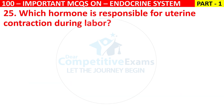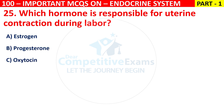Q25. Which hormone is responsible for uterine contraction during labor? Options are estrogen, progesterone, oxytocin, or prolactin.